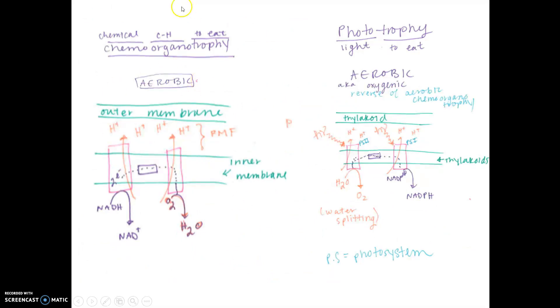For cellular respiration, we talked about chemo organotrophies - chemical organic or inorganic chemicals that provide electrons under aerobic conditions with oxygen as the acceptor. For photosynthesis, we are dealing with phototrophy.